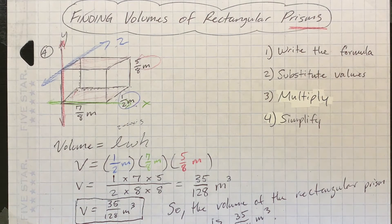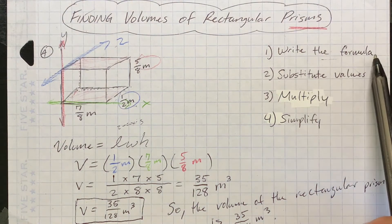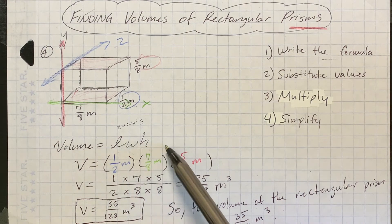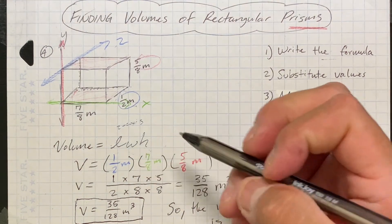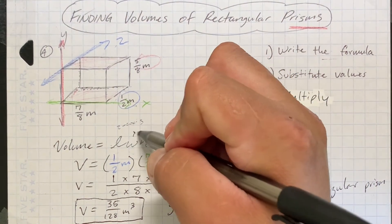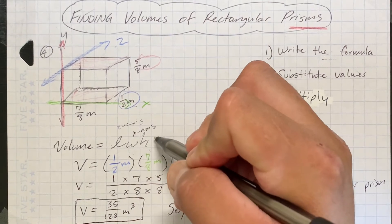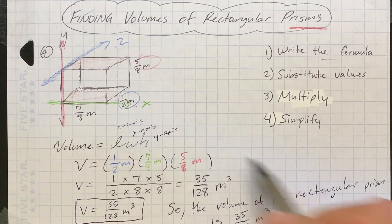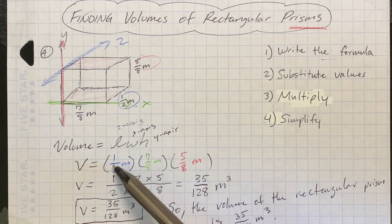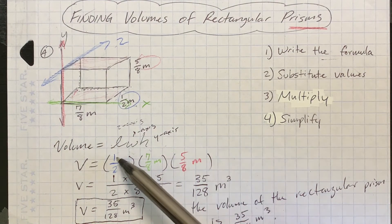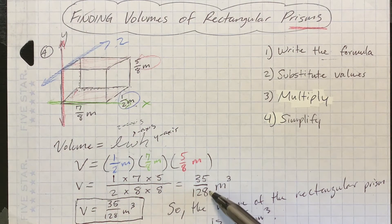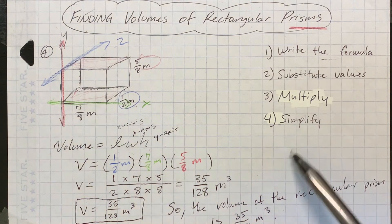To recap the steps: write the formula — volume equals length times width times height. The length is the z-axis, the width is the x-axis, and the height is the y-axis. Multiply those three dimensions together. If you have fractions, multiply all numerators, then multiply all denominators, and reduce if needed.